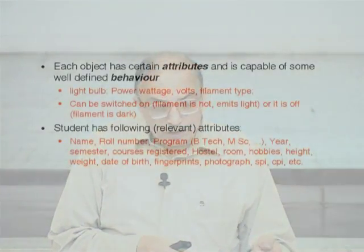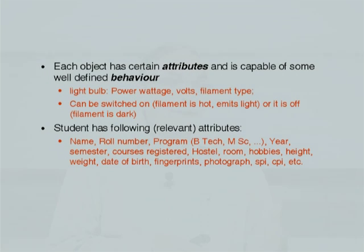You limit the number of attributes you wish to describe in the context of writing programs — you constrain them to those which are relevant. For example, if you are considering the academic career of a student in IIT, many of these attributes will be valid but some will be irrelevant. Height and weight may have nothing to do with the academic characteristics of a person. On the other hand, if you are choosing an athletics team, then the list of hobbies, height, weight, and date of birth may become important. There will be attributes relevant in many applications and some only for specific applications.